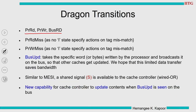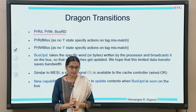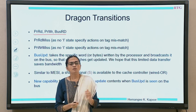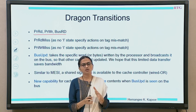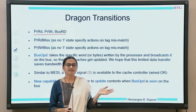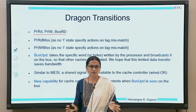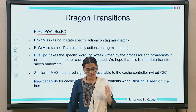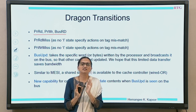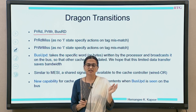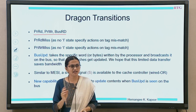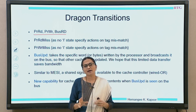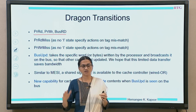Now we look at the Dragon FSM transitions. Processor read, write, and bus read are the usual ones. If there is a read miss on the processor, since we don't have an explicit I state, we send a bus read request and eventually obtain the data block. For a write miss, obtain the data block and then start modifying it. There is an implicit I state that will become clearer when drawing the FSM.